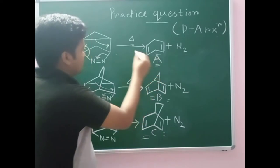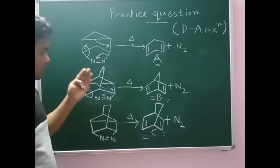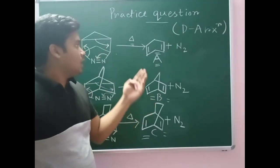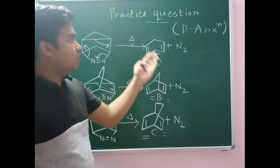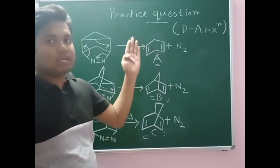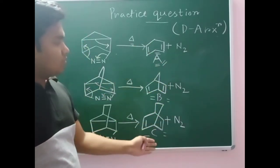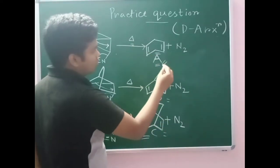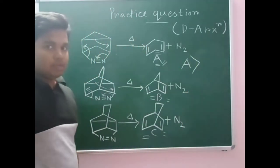These three compounds are sterically hindered — there is steric strain — so they will try to release the steric strain. Since product A has the least steric strain, the formation of A will be fastest. The steric strain has been released in A, so the rate of formation of A will be fastest.